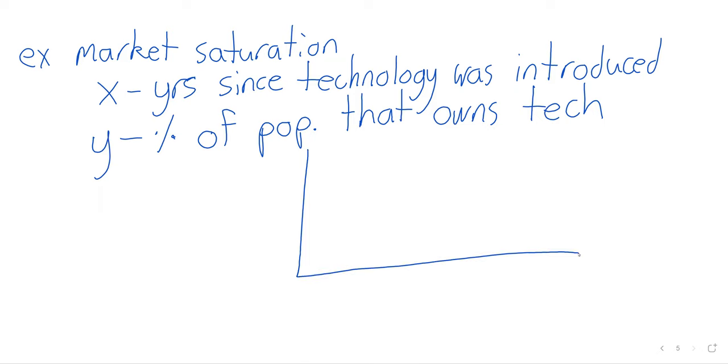So there's some threshold that y isn't going to go above. And if we look at smartphones, at this point, probably everyone in this room owns a smartphone. There are people who don't—people who can't afford it, Amish people or other people who, for religious or other reasons, don't want a smartphone.